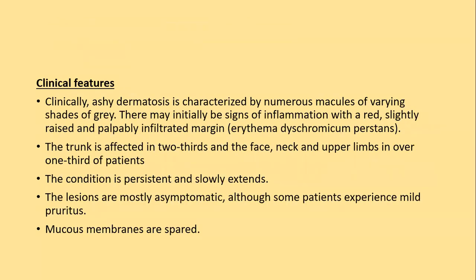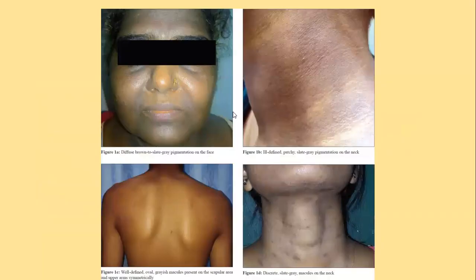Clinically, ashy dermatosis is characterized by numerous macules of varying shades of gray. There may initially be signs of inflammation with a red, slightly raised, palpable, infiltrated margin. The trunk is affected in two-thirds, and face, neck, and upper limbs in over one-third of patients. The condition is persistent and slowly extends; lesions are mostly asymptomatic, although some patients experience mild pruritus. Mucous membranes are not involved. If the face is involved, we label it lichen planus pigmentosus; if the body is involved, we label it ashy dermatosis.